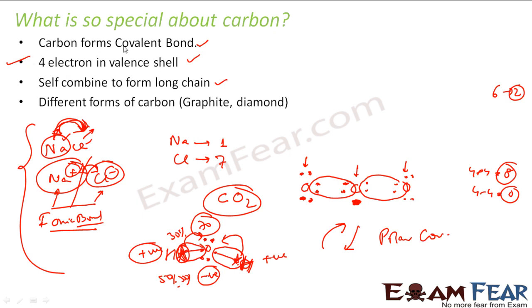So now we have a special case of carbon. It has a covalent bond. It has four electrons in a valence shell. It self-combines to form long chains. For example, carbon can combine with another carbon, like this. And it can create a big chain. And we have different forms of carbon, graphite, diamond and Buckminster Fuller. Where it is all carbon but the structure, the way it is organized, the internal structure is different and that is why they look different.